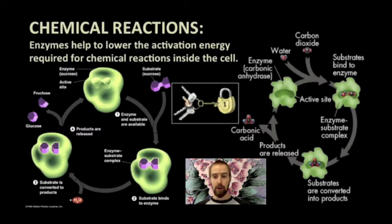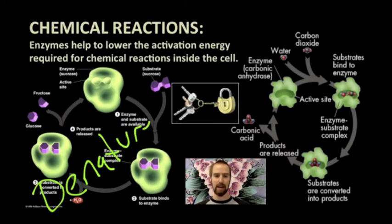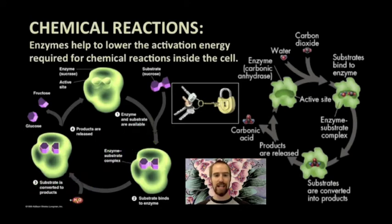In proteins like enzymes, this change in shape is called denaturing, and is actually what happens when you cook an egg. The egg whites only become white when cooked, and this change in appearance and texture is due to the denaturing of proteins found in the egg whites.